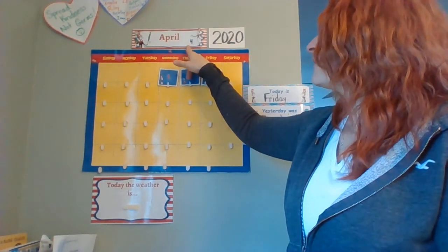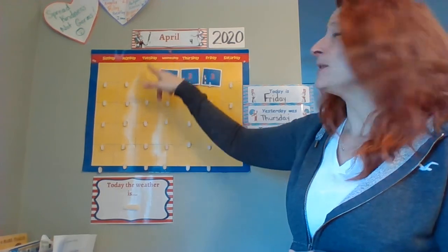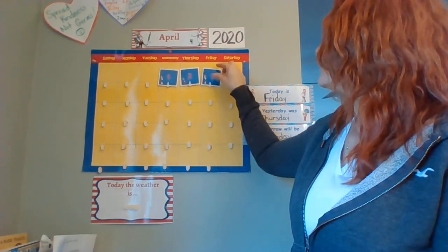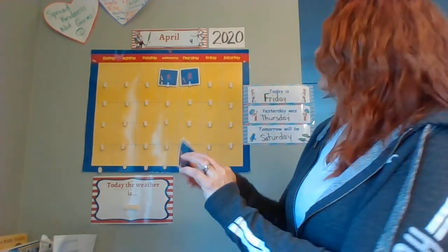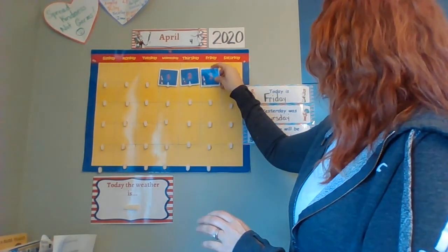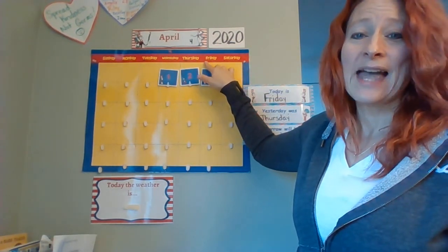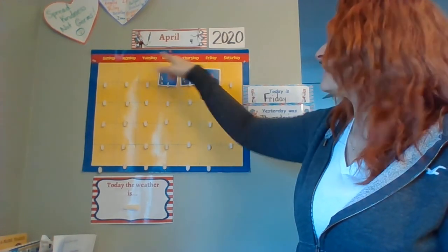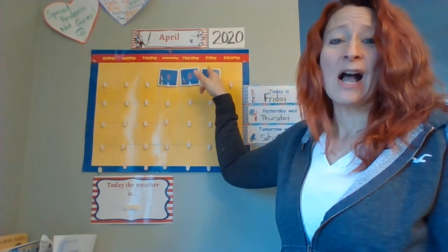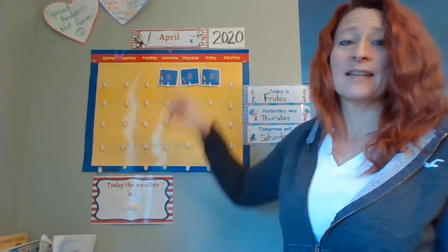All right. We said April's the fourth month. And as we look in here, we go one, two, three. It is the third day. So there's number three. And if I put it on here, I put it on this day. And it starts with the F. Now we're going to sing our song to figure out which day of the week has an F sound.